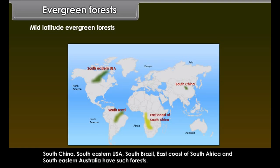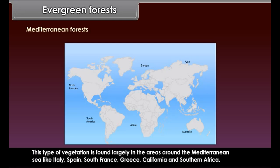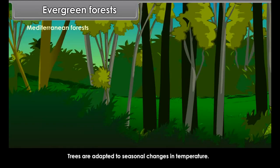Mid-latitude evergreen forests are found on the eastern margins of continents. These forests contain hardwood trees with broad leaves. Oak, eucalyptus and wattle are some economically important trees of these forests. South China, southeastern USA, south Brazil, the east coast of South Africa and southeastern Australia have such forests.